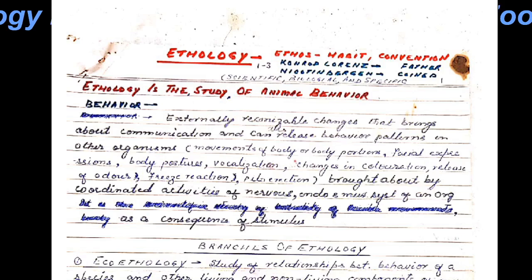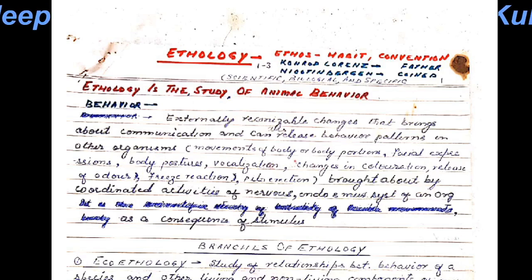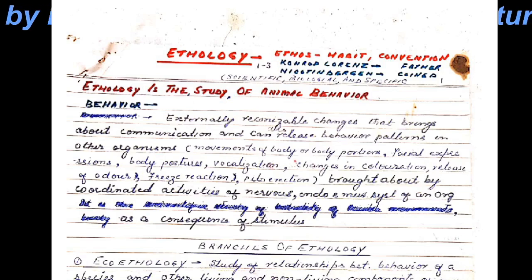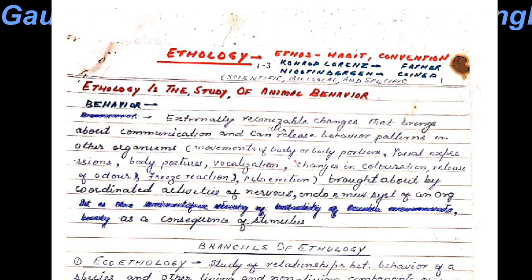If you go to the etymology of the word ethology, 'ethos' means habits or conventions, and 'logos' means to study — that means ethology is the study of animal behavior, habits, or conventions. Conrad Lawrence was regarded as the father of ethology, whereas Nicotin Bergen had coined the term ethology.